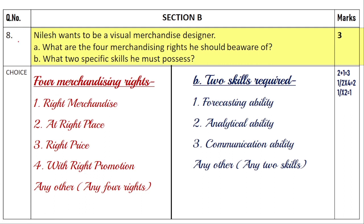There is also a choice in question number eight. The alternate question: Nilesh wants to be a visual merchandise designer. What are the four merchandising rights he should be aware of, and what two specific skills must he possess? The four rights carry two marks and the two skills carry one mark. The four merchandising rights are: the right merchandise, at the right place, with the right price, and the right promotion.